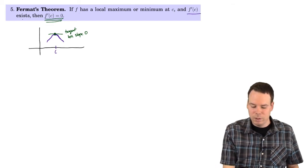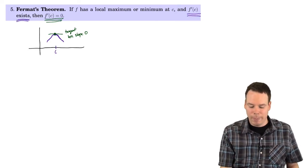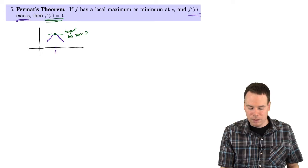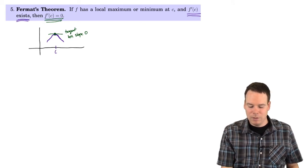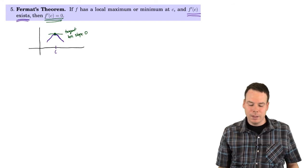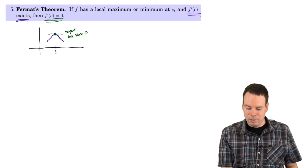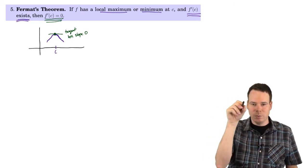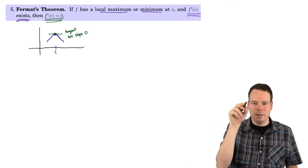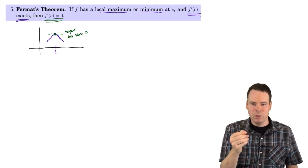The problem is, if you do a sharp corner there, the derivative wouldn't exist. But in our statement of the theorem, we're assuming that the derivative exists. So if you come up and have to turn around to come back down, and you know that where you turn around your derivative has to exist, so you have to turn around in a smooth fashion — that means you have to have a tangent line there with slope 0. That's what Fermat's theorem is telling us: if you turn around at a local max or local min where the derivative exists, then the tangent line must be horizontal.